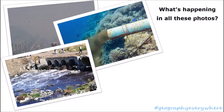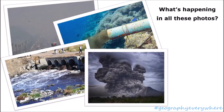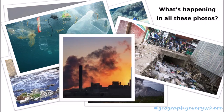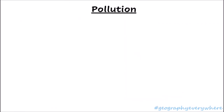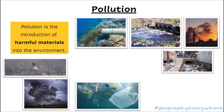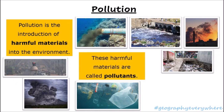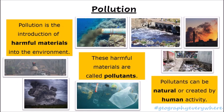What's happening in all these photos? What's going on? Exactly, this is pollution. Pollution is the introduction of harmful materials into the environment. These harmful materials are called pollutants. Pollutants can be natural or they can be created by human activity. Pollution can be natural like volcanic ash or sediment in rivers, or created by human activity like plastic and chemicals.